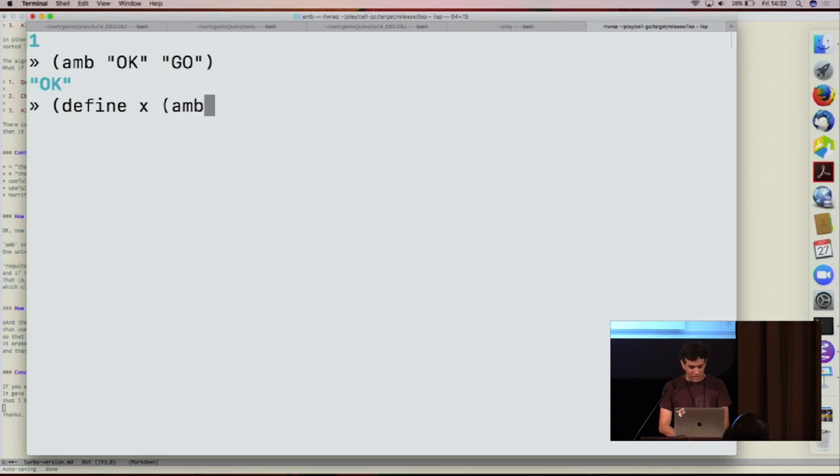So if I define a variable and call it with a bunch of arguments then the value of the variable is whatever. And then there's another function in this library called require. So if I require X to be greater than 2 then the value of X is 3. Got it?